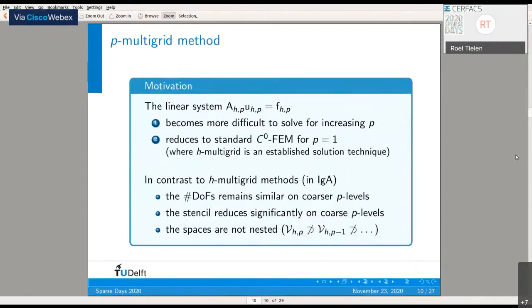The use of P-multigrid methods is motivated by the fact that our linear system becomes more difficult to solve for increasing P. At the same time, it reduces to standard C0 FEM for P equals 1. We know that at P equals 1, H-multigrid with, for example, Gauss-Seidel is quite an established solution technique.